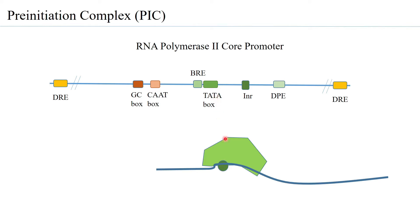When TBP interacts with the TATA box it forms a bend — it bends the DNA to form a kink. Other than the TATA box binding protein, the transcription factor 2D has between 1 to 14 different proteins called the TATA box binding protein accessory factors (TAFs).